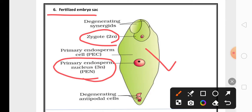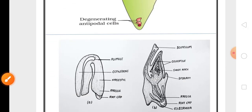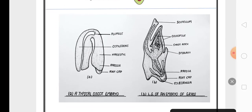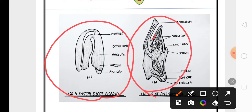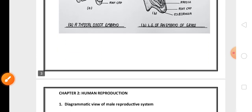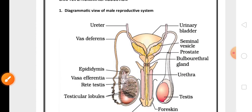So this is a diagram of fertilized embryo sac. Then the two remaining diagrams from this chapter which are not so many times asked but they may ask this year, one is dicot embryo and another one is monocot embryo. Monocot embryo is also called as embryo of grass. From second chapter human reproduction, either the diagrammatic view of male reproductive system or the diagrammatic view of female reproductive system, any one diagram is important for five marks.